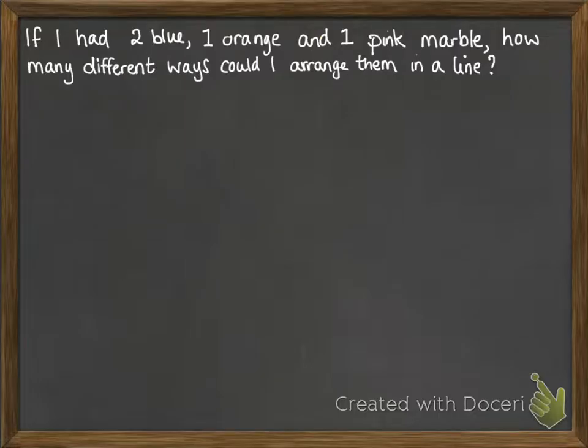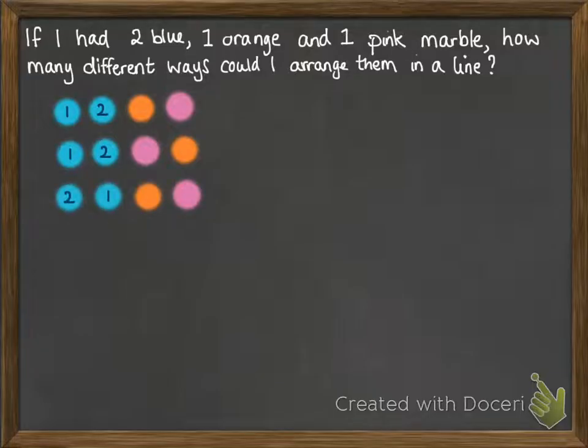Now moving on to look at if we don't have unique items in our collection. So this one we've got two blue, one orange, and one pink marble, and we want to work out how many different ways we could arrange them in a line. So we could do it like this: the first blue one, the second blue one, then orange, then pink. We could swap over the pink and the orange. We could swap over the two blue marbles. But those marbles aren't actually labelled one and two—this is just to demonstrate things.